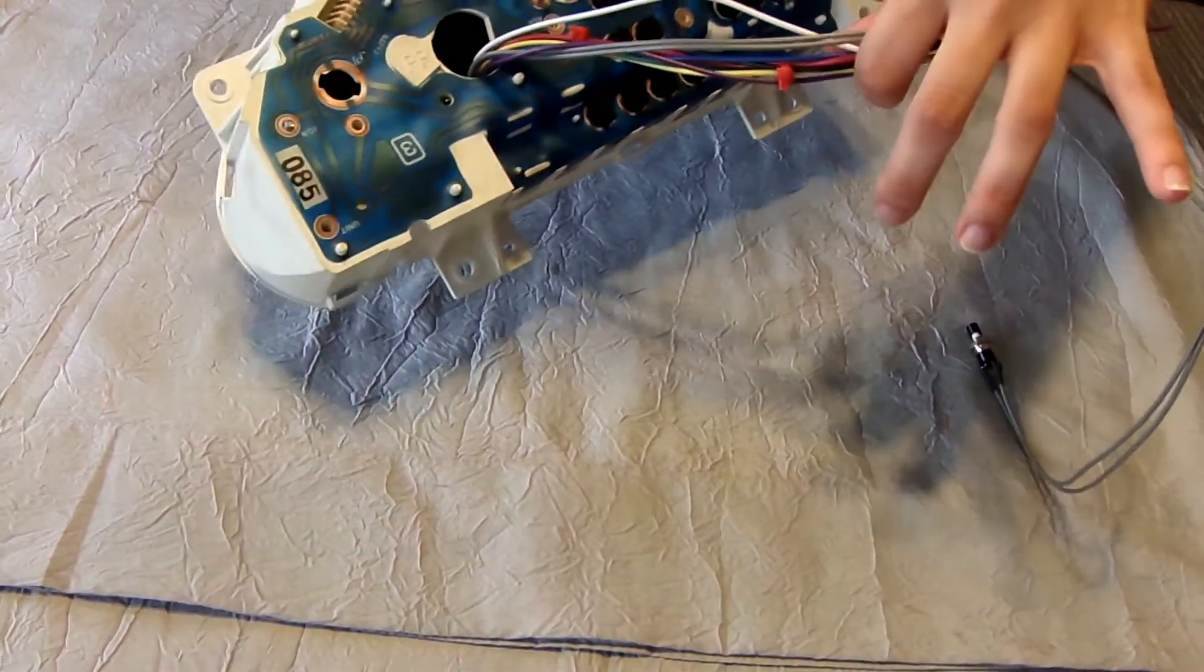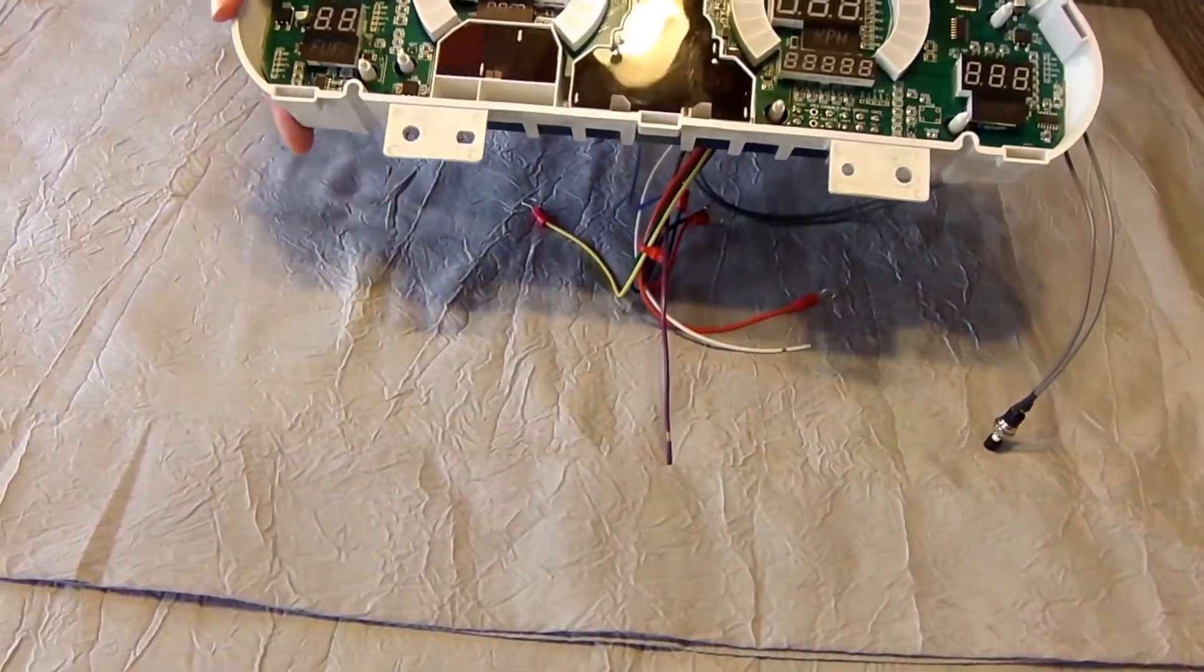Once your housing is empty, take the digital wiring board and slip the wires through the back. Seat the board in the housing.